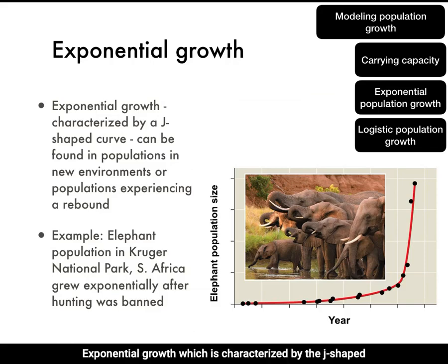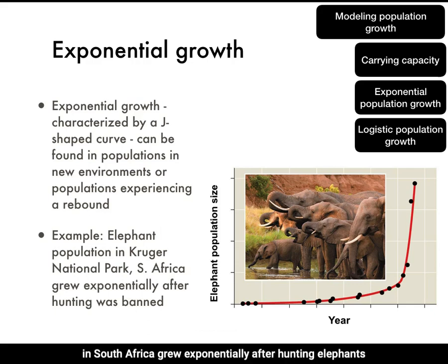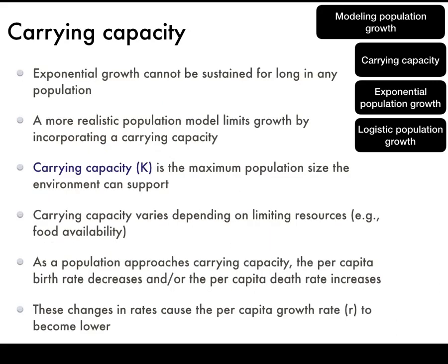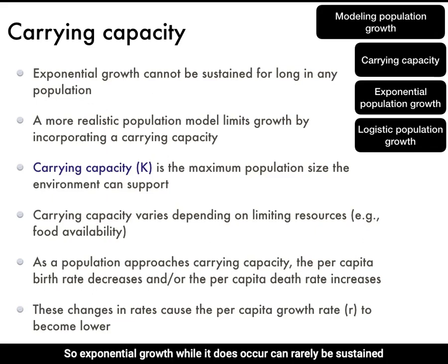Exponential growth, characterized by the J-shaped curve, can be found in populations in new environments or populations experiencing a rebound. For example, the elephant population in Kruger National Park in South Africa grew exponentially after hunting elephants was banned — you can see these data plotted on the graph. The exponential growth model assumes resources remain abundant as the population grows, but this is rarely the case in the real world, so exponential growth can rarely be sustained for long.